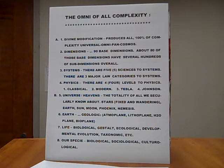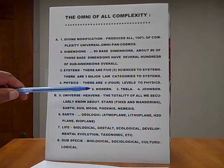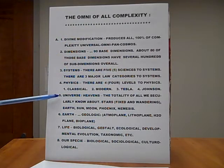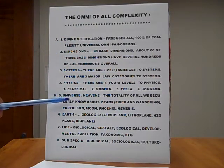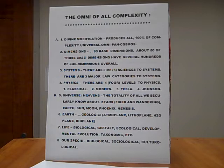Number four, physics. There are four levels to physics. Classical, modern, Tesla, and Johnson. B. We'll go to five now. Universe, heavens. The totality of all we secularly know about. The stars, fixed and wandering. The earth, sun, moon, phoenix, nemesis, and so forth.